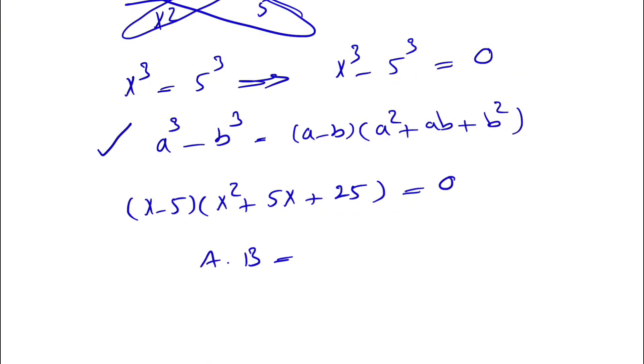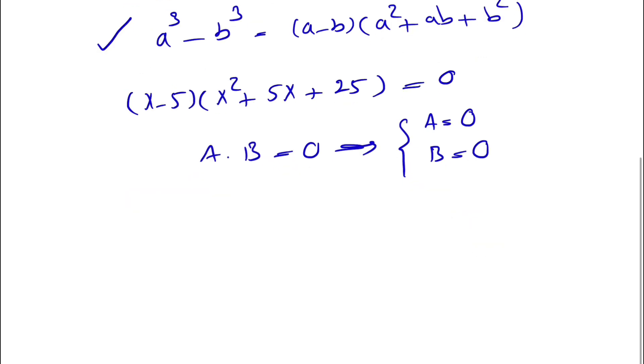Now we have our a times b equals 0. That means a can be 0 or b can be 0. So if we do x minus 5 is equal to 0, our x will be 5, and that would be one answer for this question.